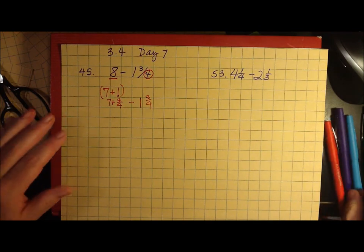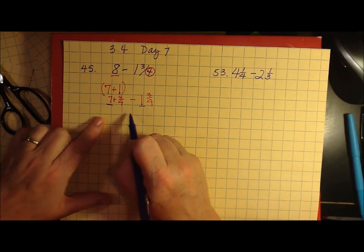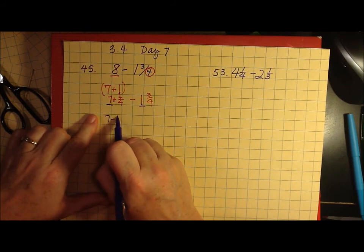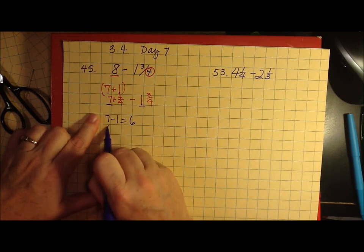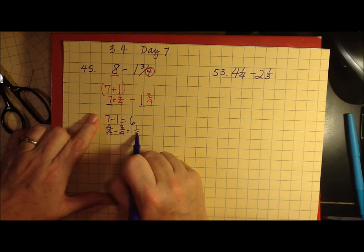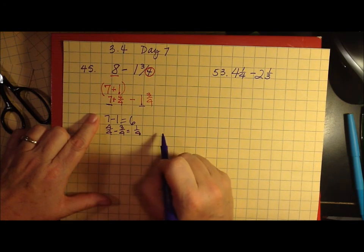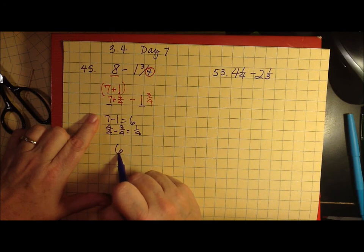So let's look at the whole numbers first. 7 minus 1 is 6, and four-fourths minus three-fourths equals one-fourth. So my answer is 6 and one-fourth.